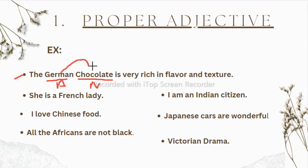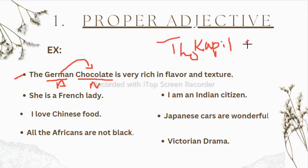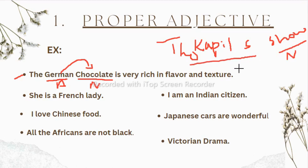The German chocolate — to show the quality of this chocolate we use the word German. Similarly, 'Kapil' is the name of a person and a noun, but in 'The Kapil Sharma Show,' 'show' is the noun we are describing. 'Kapil Sharma,' which was a proper noun before, now becomes an adjective qualifying the noun 'show.' In the same way, 'German' was a noun before but when used with another noun it becomes an adjective to qualify 'chocolate.'